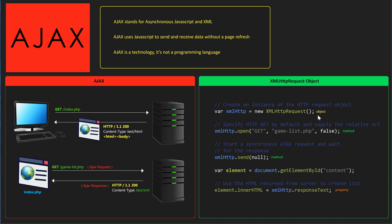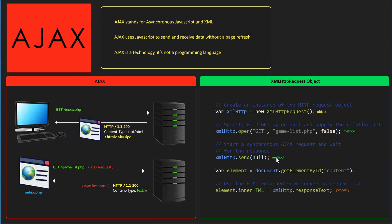XMLHttpRequest is an object, and we know that objects have methods. We're gonna be using the open method to get to game-list.php, then we're gonna use the send method to actually send the request, and finally we're gonna access the property of our object which is responseText, which is going to have the actual content.